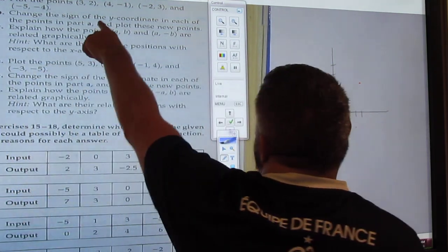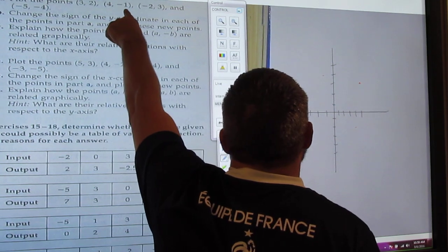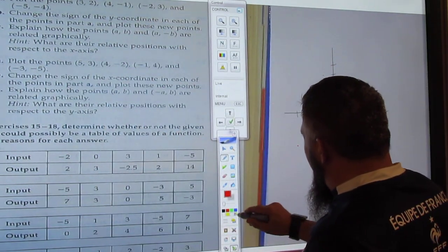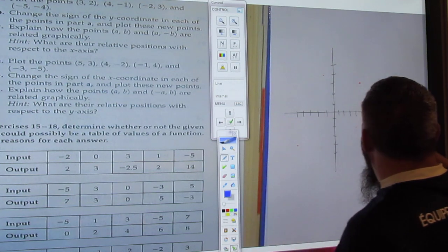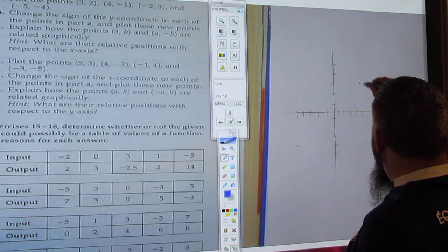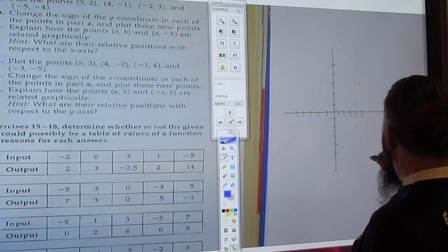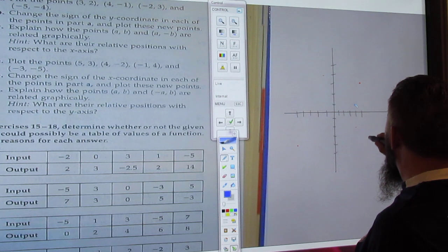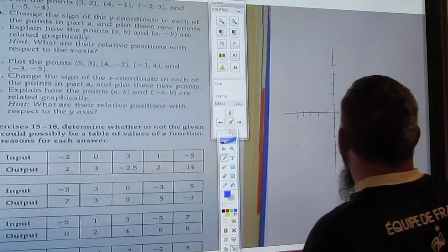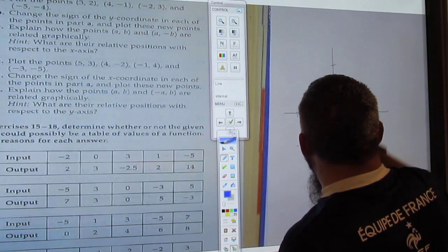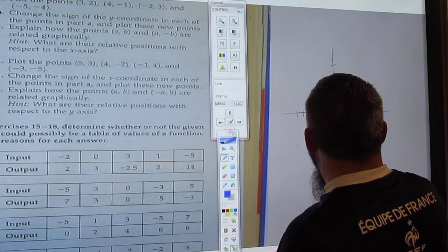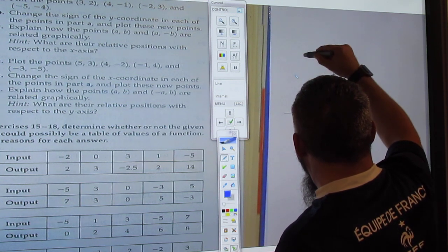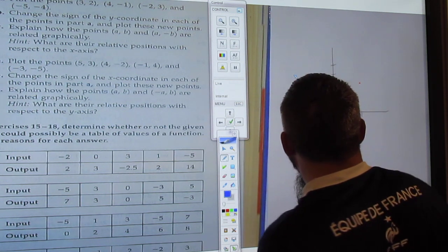So the 2 becomes a negative 2. The 1, negative 1 becomes a 1. And we can show that by changing these to blue. So this is going to be here. This is going to be here. This is going to be down here. And this is going to be up here.